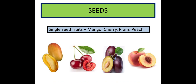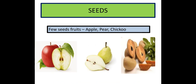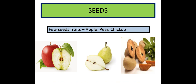And which are the fruits which have few seeds? Matlab, one se zyada, but bohat zyada nahi. Apple, pear, chiku - these are the fruits which have only few seeds. And the fruits like papaya, watermelon, jackfruit - they have many seeds, chote chote se bohat sare seeds hote hai.